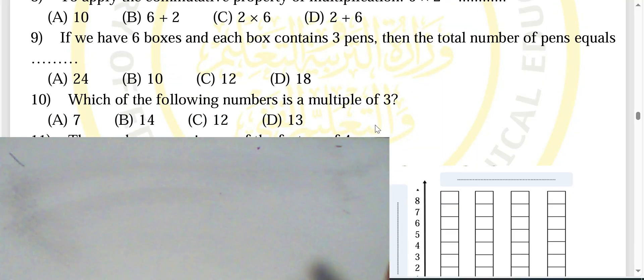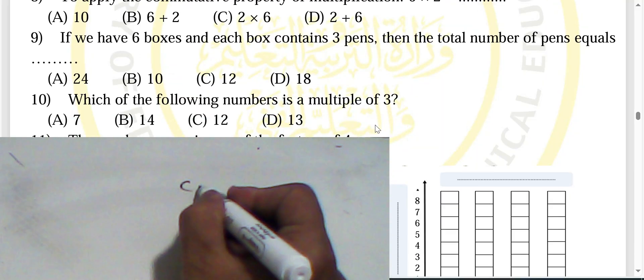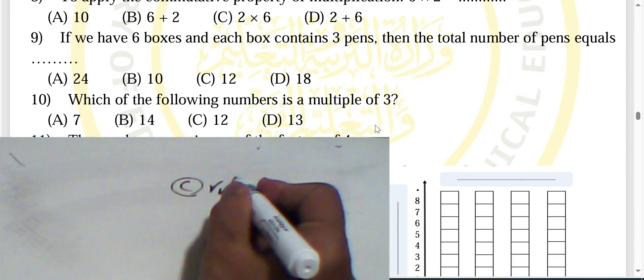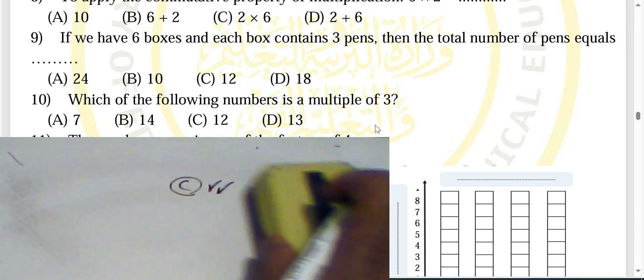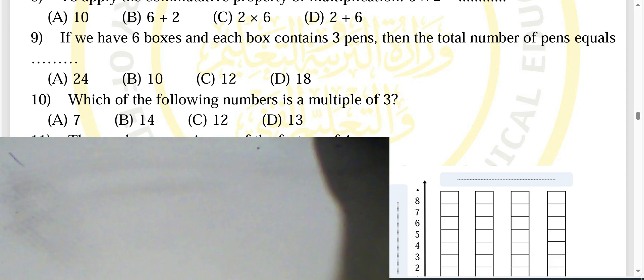Question ten: which of the following numbers is a multiple of three? The number that can be divided by three is twelve — twelve is a multiple of three, choose letter C.